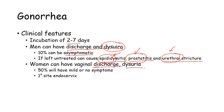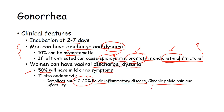Women can have vaginal discharge and dysuria — thicker, yellowish to brownish discharge. 50% will have mild or no symptoms in women. While males are much more symptomatic, women are less symptomatic. Among those with symptomatic complications, 10 to 20% can develop pelvic inflammatory disease, chronic pelvic pain, and infertility.